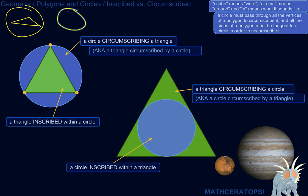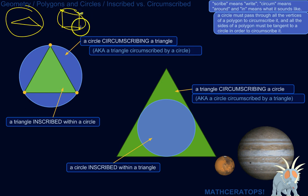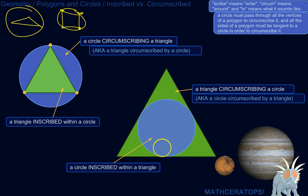Likewise, if a circle is circumscribing a square, that circle actually has to connect with all four vertices, all four corners of that polygon. So for a square to be inscribed within a circle, its vertices have to touch the circle. Similarly, for a circle to be inscribed within a triangle, all three sides of that triangle have to be tangent to the circle — they have to touch the circle at just one point.